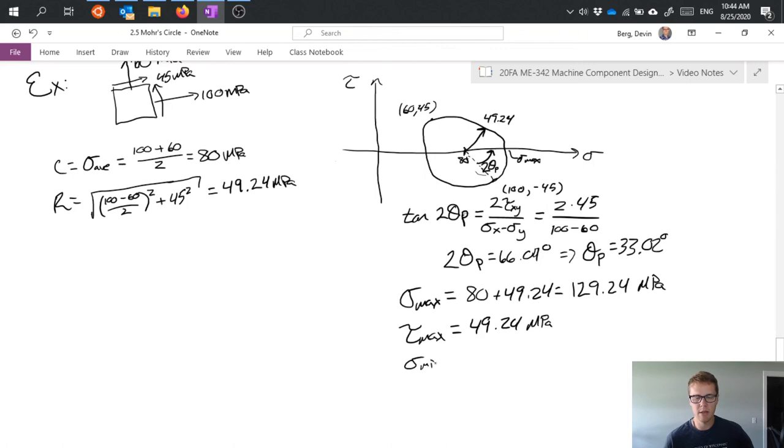Sigma min in this case would be 80 minus 49.24 so that equals 30.76 megapascals. So great I got all those values.